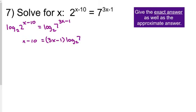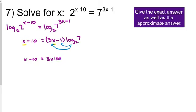Our goal is to solve for x, and we have x on the left and x on the right. The next steps help us get all the x terms on one side of the equation. I'm going to distribute log base 2 of 7 — multiply it by 3x and multiply it by negative 1. So now we have x minus 10 equals 3x log base 2 of 7, minus 1 times log base 2 of 7.